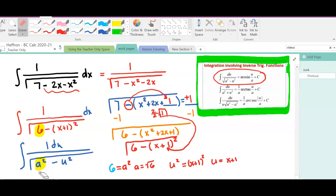I need then arc sine of u. Well, u is x plus 1 over a. a is square root of 6 plus c. That would be my final answer.